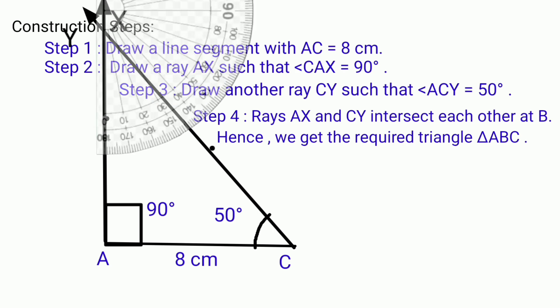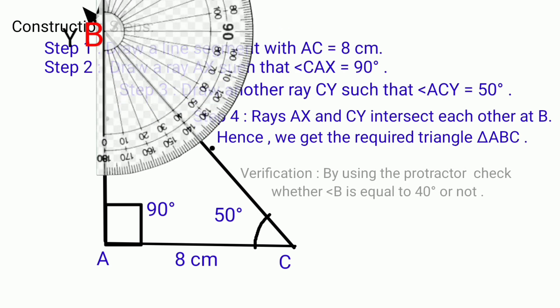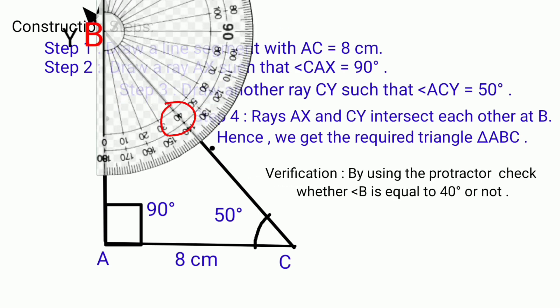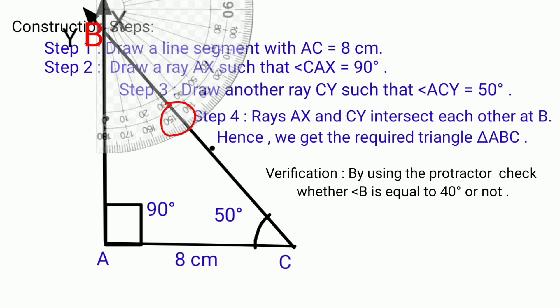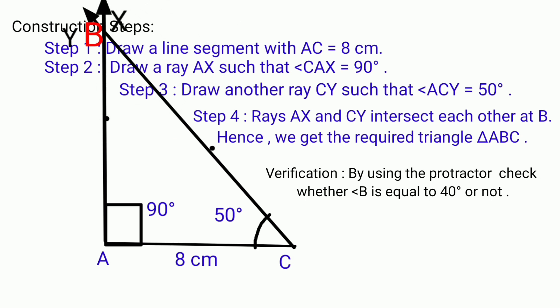Step 4: Rays AX and CY intersect each other at B. Hence we get the required triangle ABC. Verification: By using the protractor, check whether angle B is equal to 40 degrees or not.